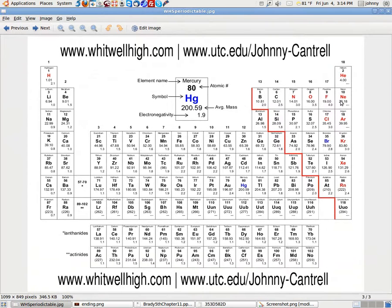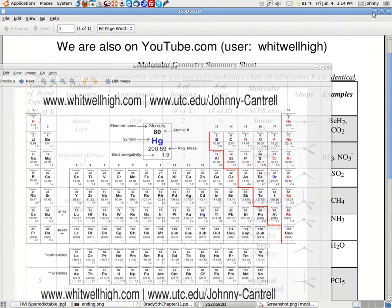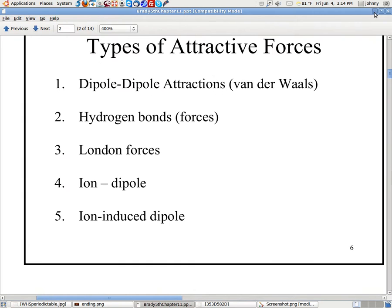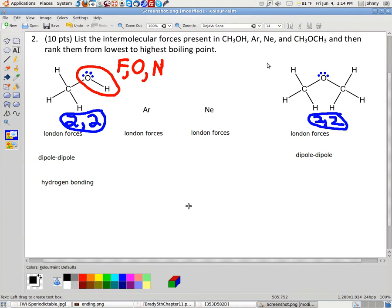And on the periodic table, if you notice, Ne and Ar here are in the same column because they're both noble gases, but notice that Ne weighs the less. When they have the same number of forces or the same type of forces, then you go by molar mass. So, the weakest would be Ne. So, we would write Ne down first. Ne would have the lowest.